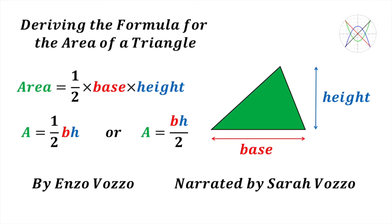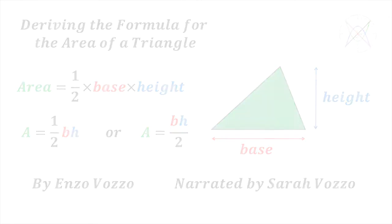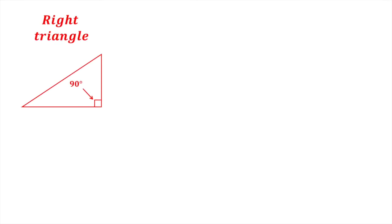Before we do this, we need to consider the three different types of triangles that can exist in terms of angles. One type of triangle is a right triangle. This type of triangle contains one right angle, that is, an angle of 90 degrees.